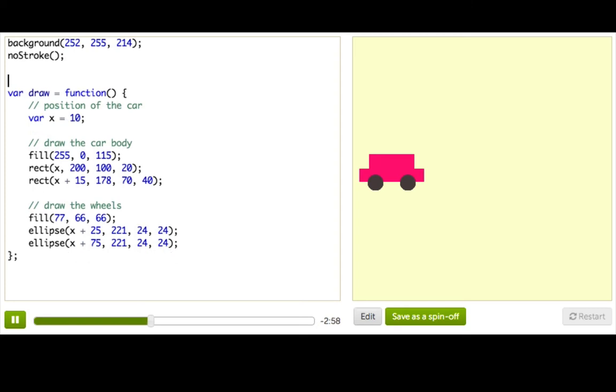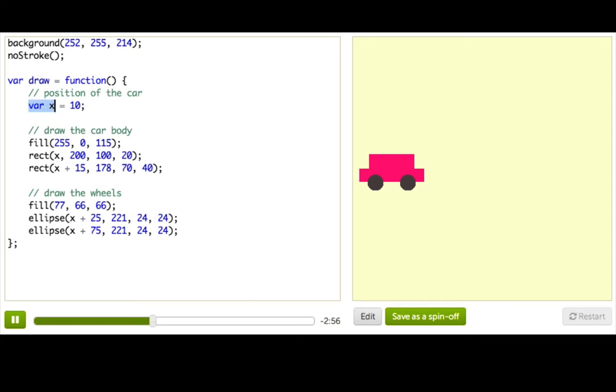Because the first time we run this draw loop, the computer is going to make a new variable x, set it to 10, draw two rectangles, draw two ellipses. And then it's going to go all the way back to the top and do the same thing. Make a new variable x, set it to 10, draw two rectangles, draw two ellipses. Same exact thing. Nothing has changed, so you're not going to see any animation. It's just drawing the same rectangles and ellipses on top of the old ones.